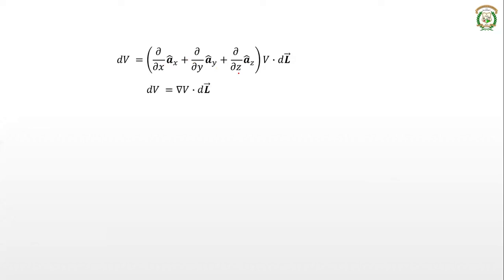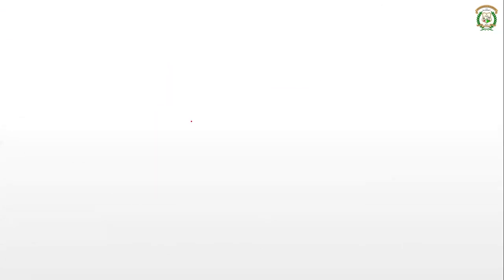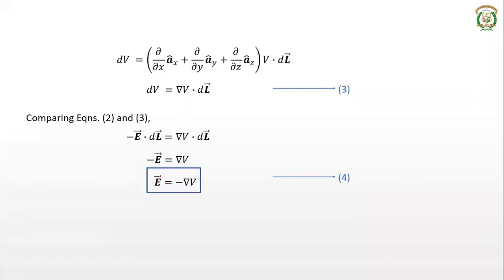So dV = ∇V·dl — call this equation 3. From equation 2 we had dV = -E·dl. Comparing equations 2 and 3, since dl is common on both sides, we get -E = ∇V, or equivalently, E = -∇V. This is one of the very important equations, giving the electric field intensity in terms of the potential or potential gradient.